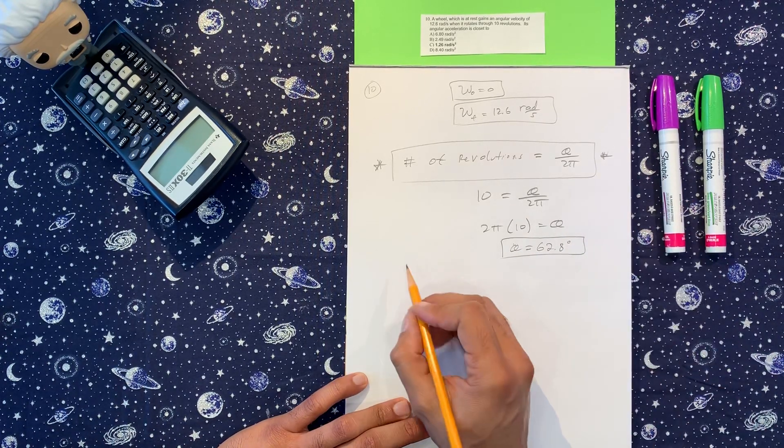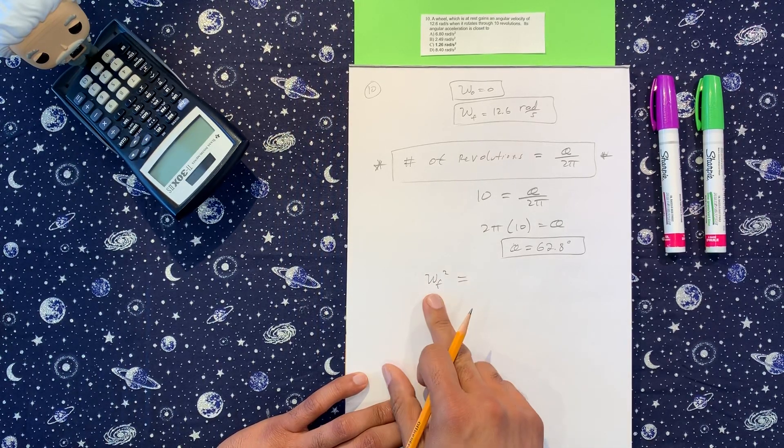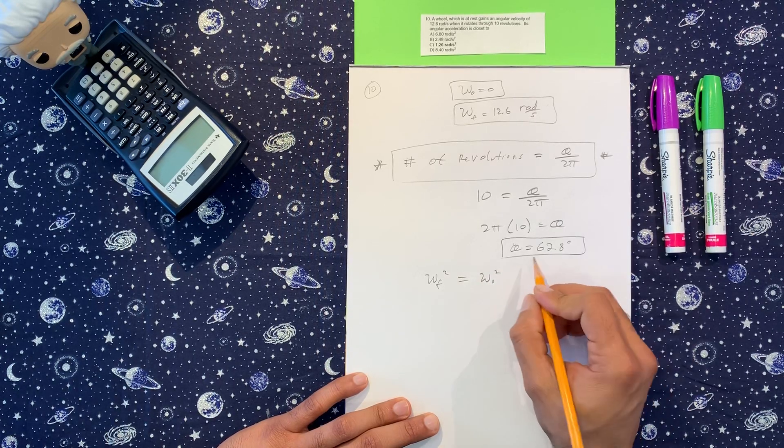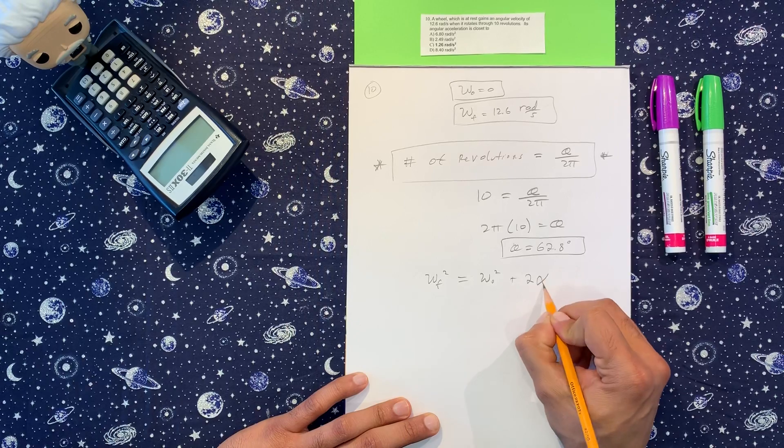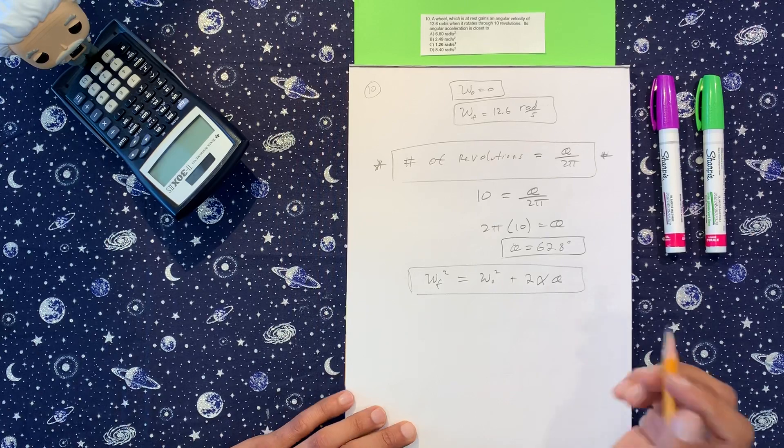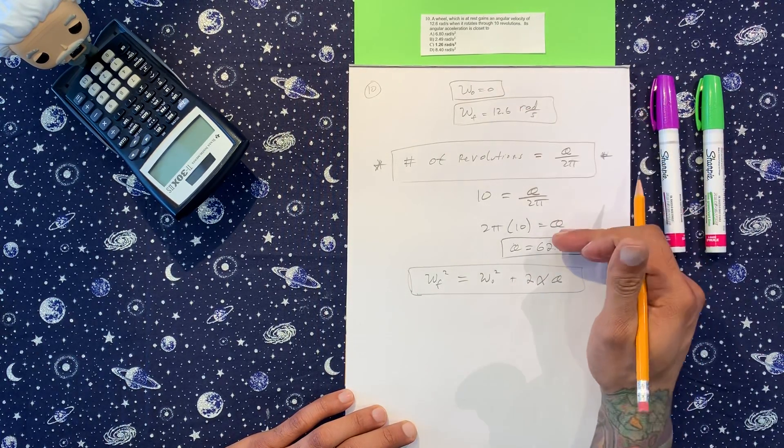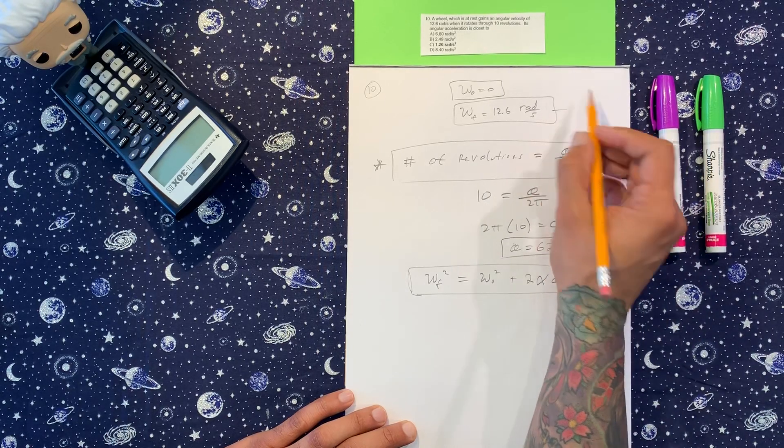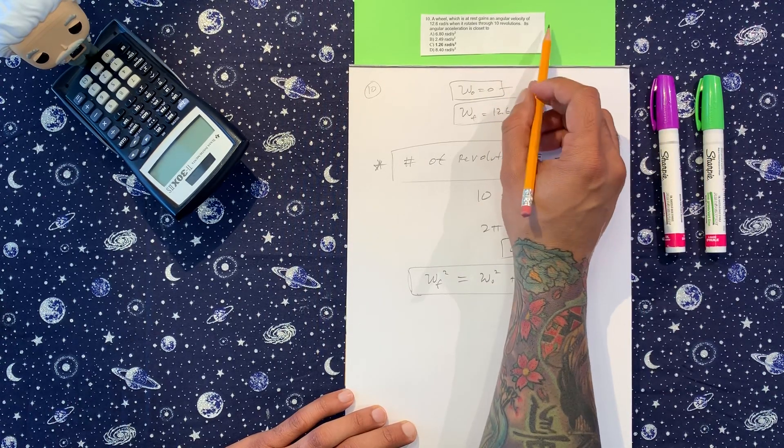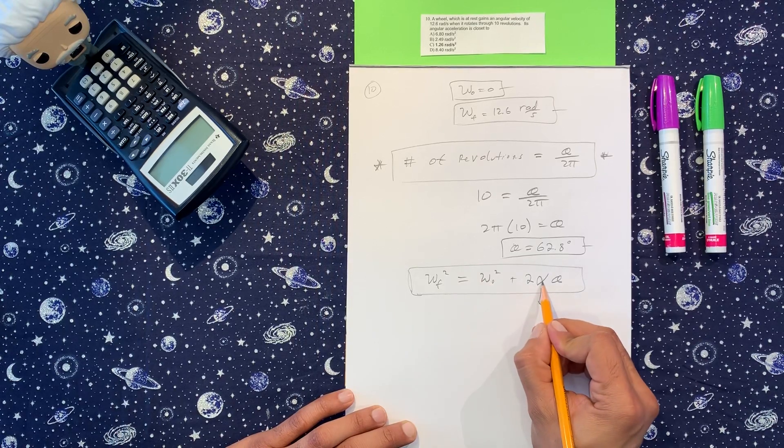Look on your formula sheet and you should see this equation here which is for angular frequency. Angular frequency final squared is equal to the angular frequency initial squared plus 2 times angular acceleration times theta. I have some videos on how to derive these, but for this look for an equation that has the maximum number of things that you have. You have this, you know this, and you have theta. This is perfect because what they're asking for is its angular acceleration, which is this one. This is velocity, this is acceleration, angular acceleration.